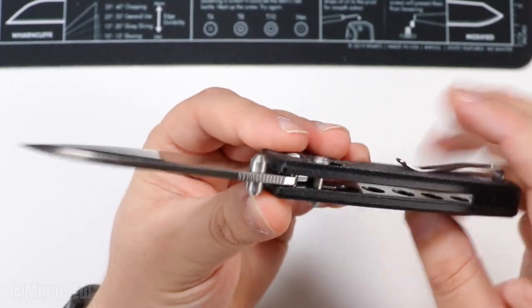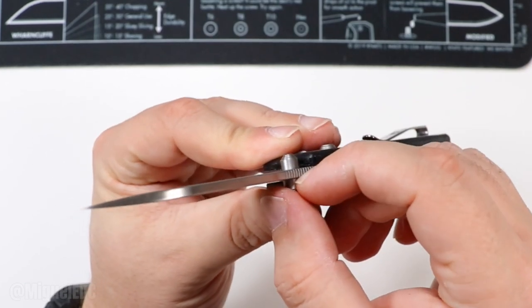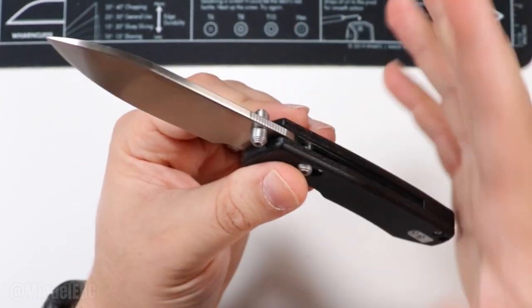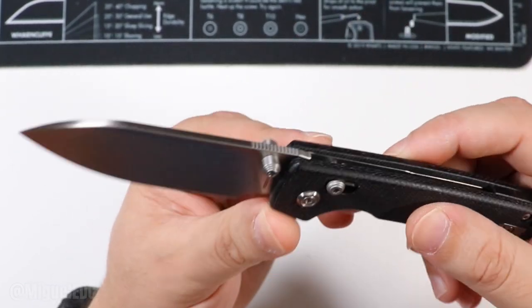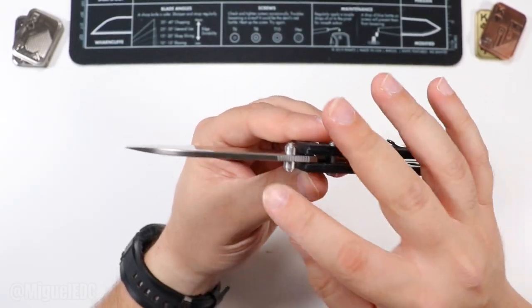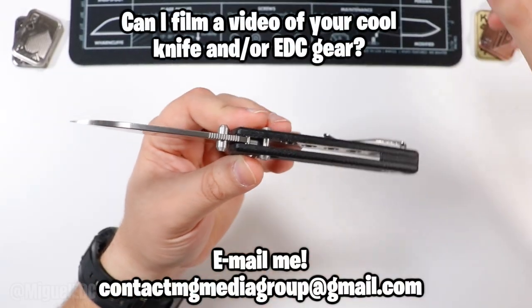For whatever reason, they call it the reversible thumb stud. No, bro, just put a thumb stud on either end. Like, people don't want to have to unscrew one thumb stud to then put it on the other side.